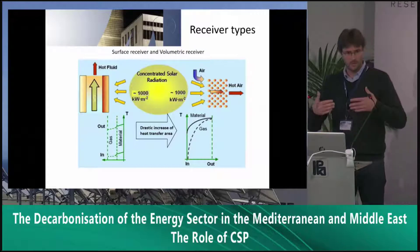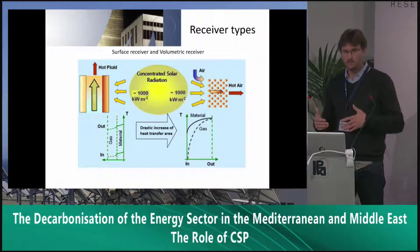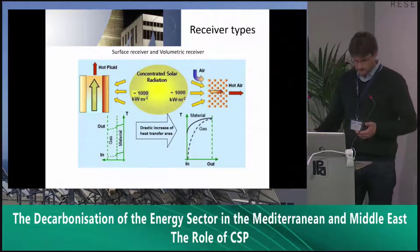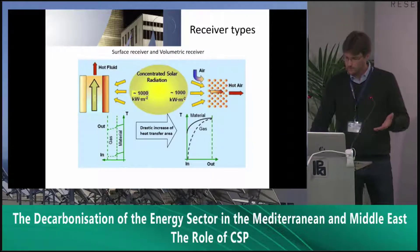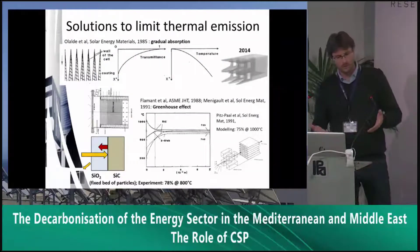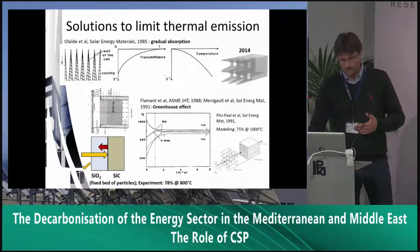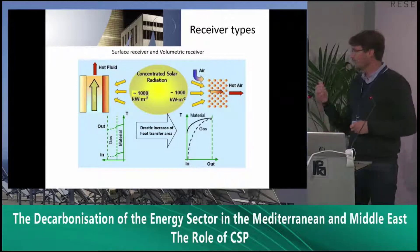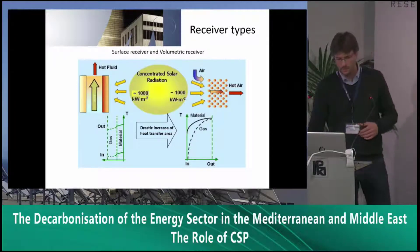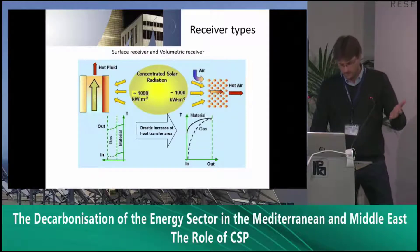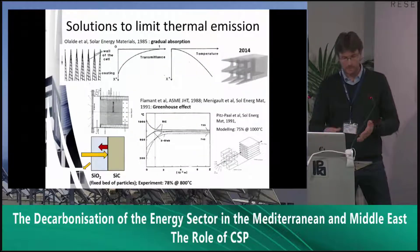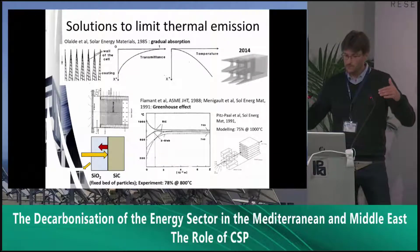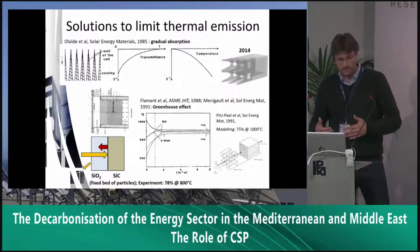The concept of the volumetric receiver is to cool down the aperture of the receiver, which is responsible for heat losses, thereby achieving lower thermal losses due to the lower temperature of the solid near the aperture. The volumetric effect means that the temperature of the gas at the outlet of the receiver is lower than the temperature of the material at the outlet, which is responsible for thermal losses. To achieve this volumetric effect, two main concepts were proposed: first, a gradual absorption of radiation inside the receiver, and second, using the greenhouse effect.